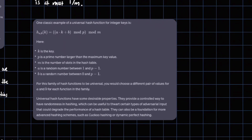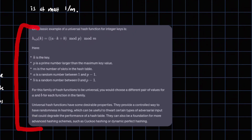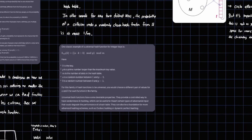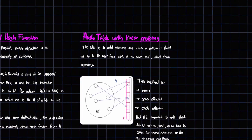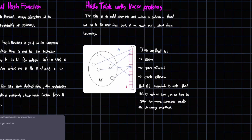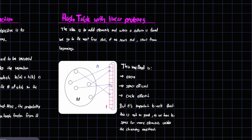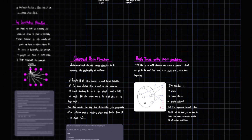A classic example would be a universal hash function for integer keys. We don't need to go deep into this — it's just useful to understand what a universal hash function is. Now let's look at the last concept: hash tables with linear probing.